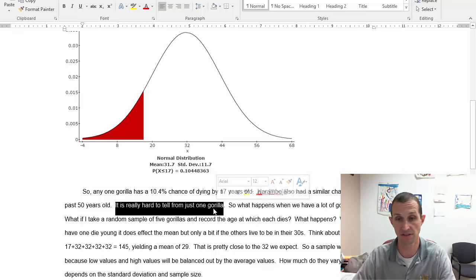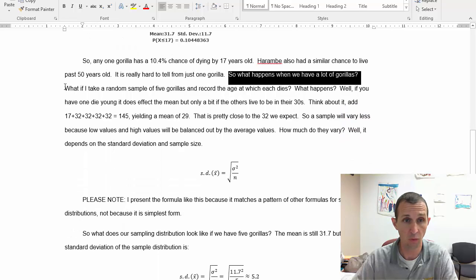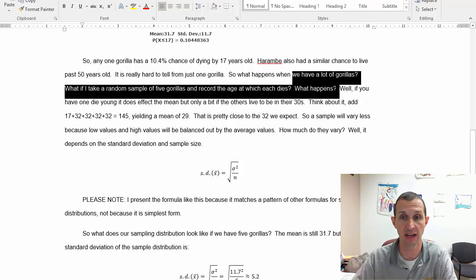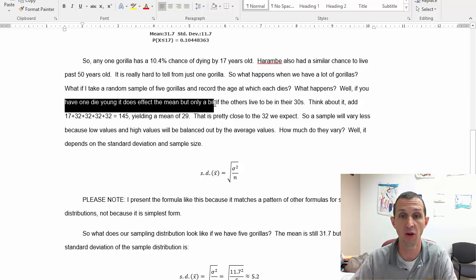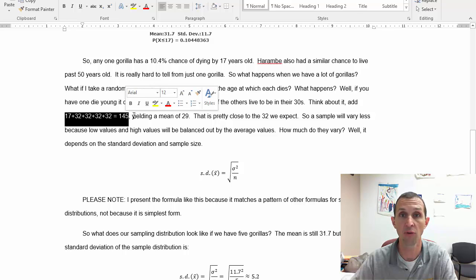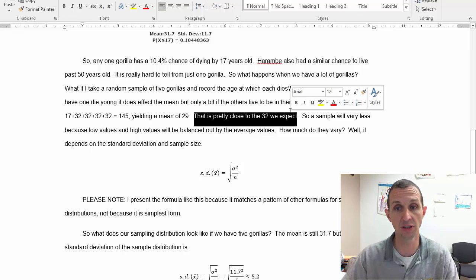So what happens when we have a lot of gorillas? What if I take a random sample of five gorillas and record the ages at which each one dies? Well if you have one die young it does affect the mean but only a bit if the others live to be in their 30s. So think about it, if you add 17 to 32 which is an average age, to another 32 year old gorilla, another 32 for average age gorillas, you get 145 and when you divide that by five you get a mean of 29. 29 is pretty close to 32. This is pretty close to what we expect.